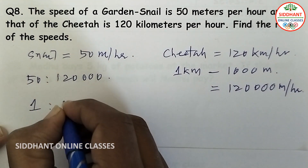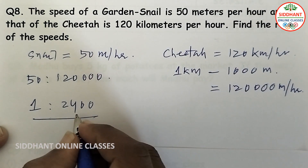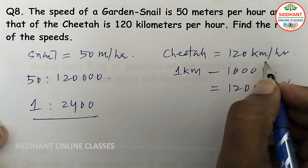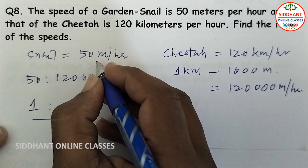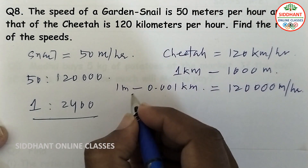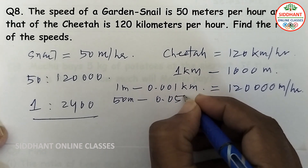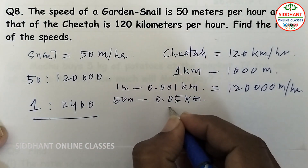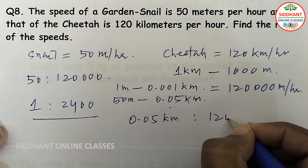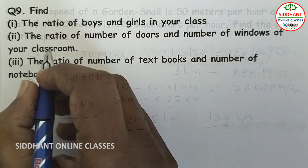Comparing 50 meters and 1,20,000 meters, dividing both by 50 gives 1 and 2,400. So the ratio of snail to cheetah is 1 is to 2,400. Alternatively, converting snail speed to kilometers: 50 meters equals 0.05 kilometers, giving ratio 0.05 is to 120.